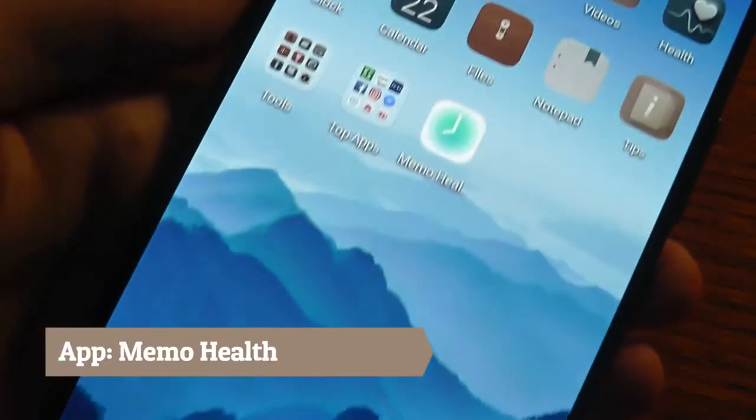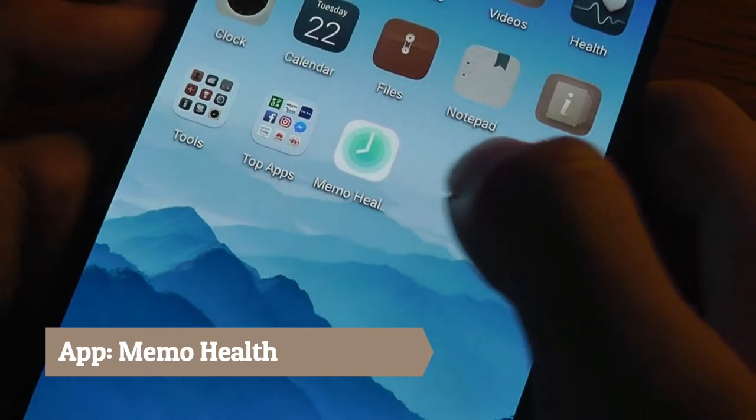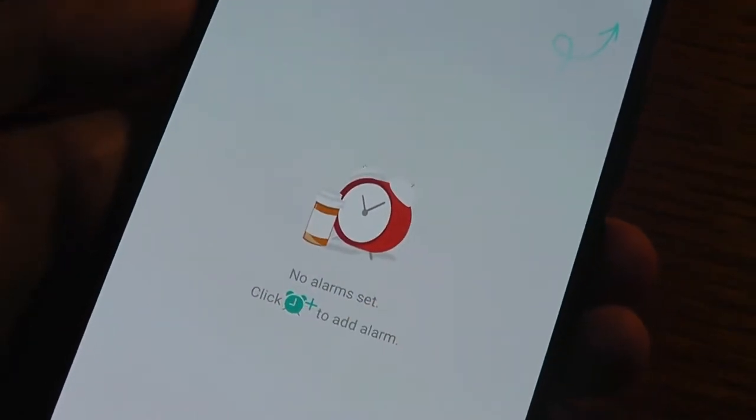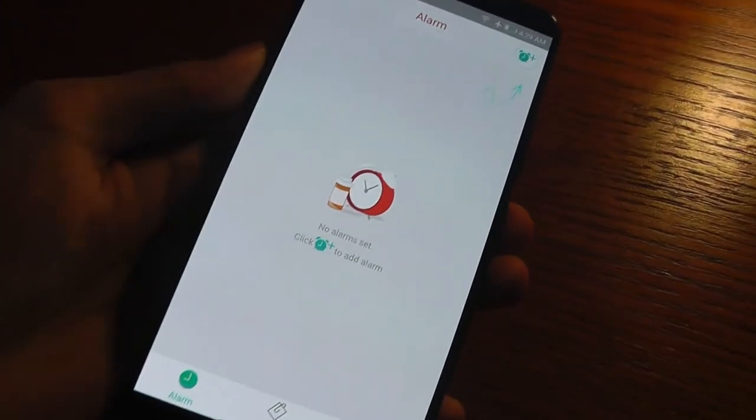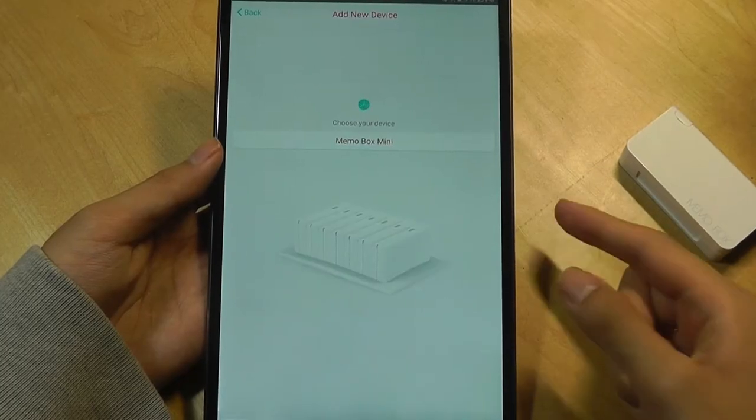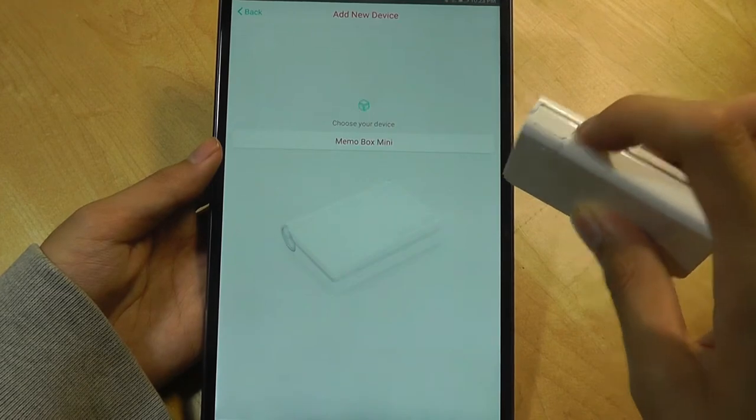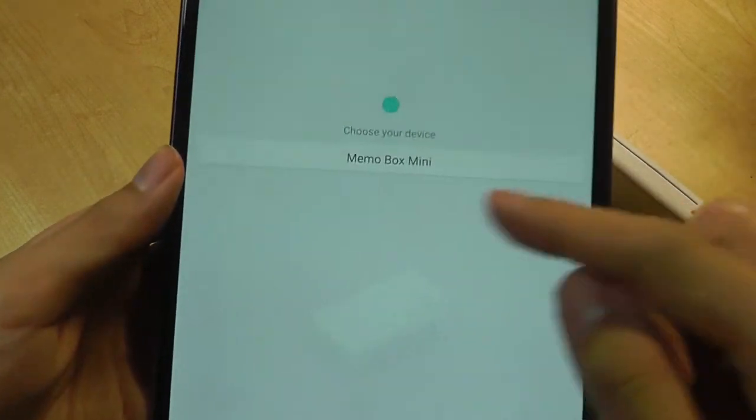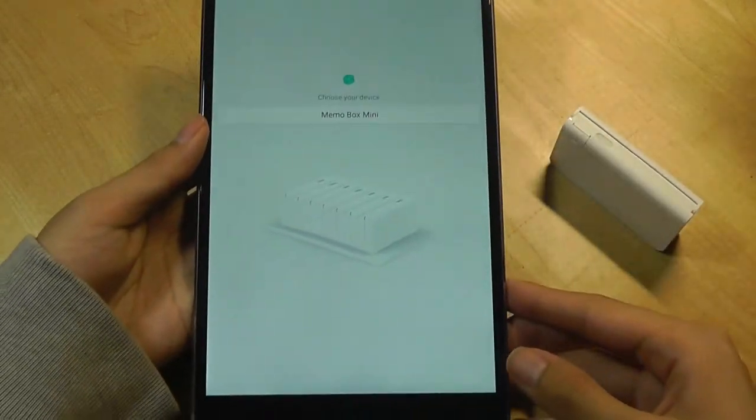On the phone, it's simply called Memo Health, and I can tap on this. You can also create an account or a profile to sign in more securely. Going back to the pairing screen, first you just tap on the key on top for a second, and it will try and find it using Bluetooth, and then you tap on the device to connect.